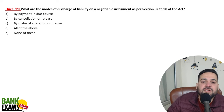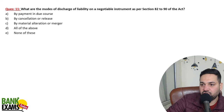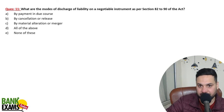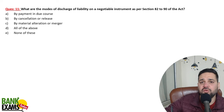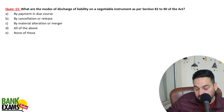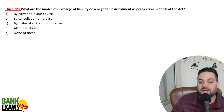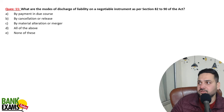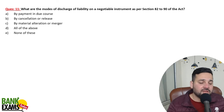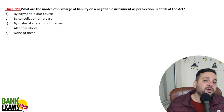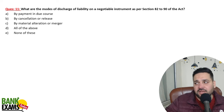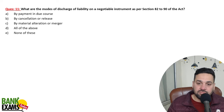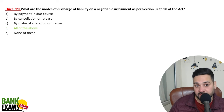What are the modes of discharge of liability on a negotiable instrument as per Sections 82 to 90? The modes of discharge include: payment in due course, cancellation of the instrument, or material alteration. For example, if someone alters a 10,000 rupee cheque to 1 lakh rupees, the bank cancels it — and that discharges the drawer's liability.